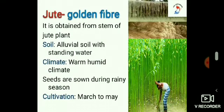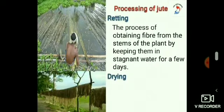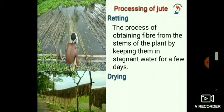We also obtain natural fiber from jute. It is called golden fiber because of its color, which ranges from off-white to brown. It is one of the cheapest fibers, obtained from the stems of the jute plant. Jute grows best in alluvial soil with standing water and a humid climate with plenty of rainfall. The crop is planted during March to May and harvested when it is in the flowering stage. The harvested stalks are soaked in water for a few days until they start rotting — this process is called retting.